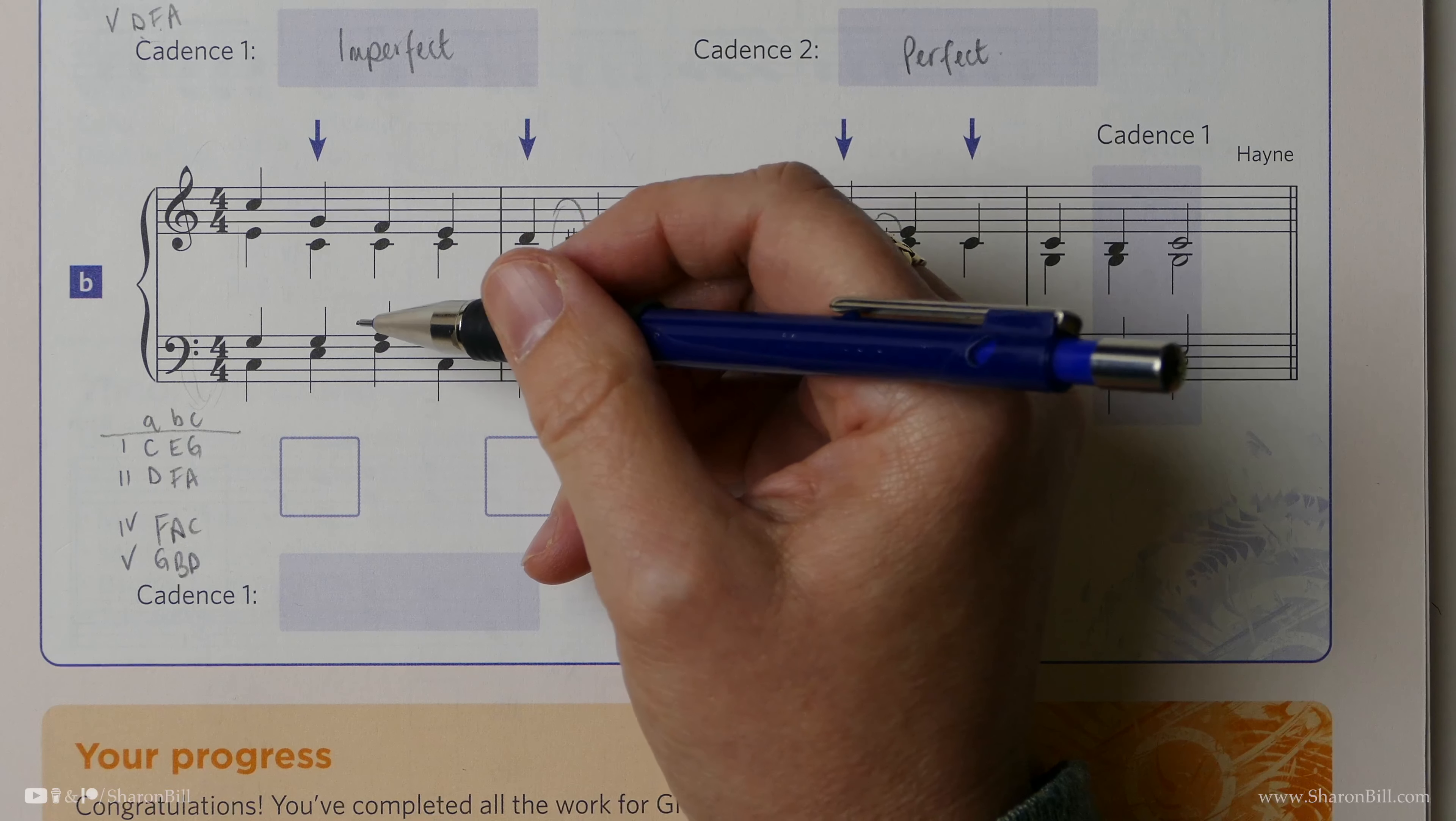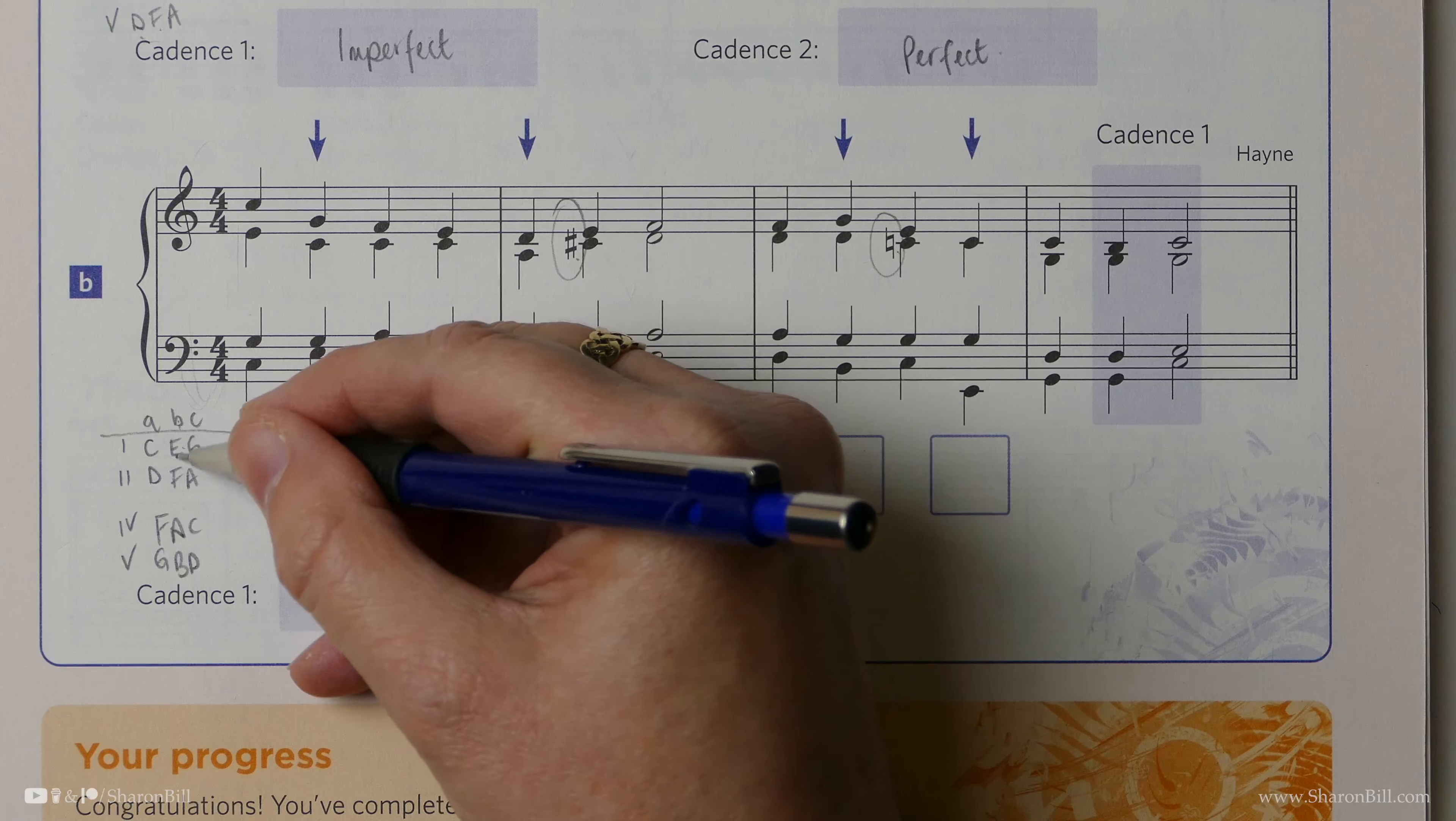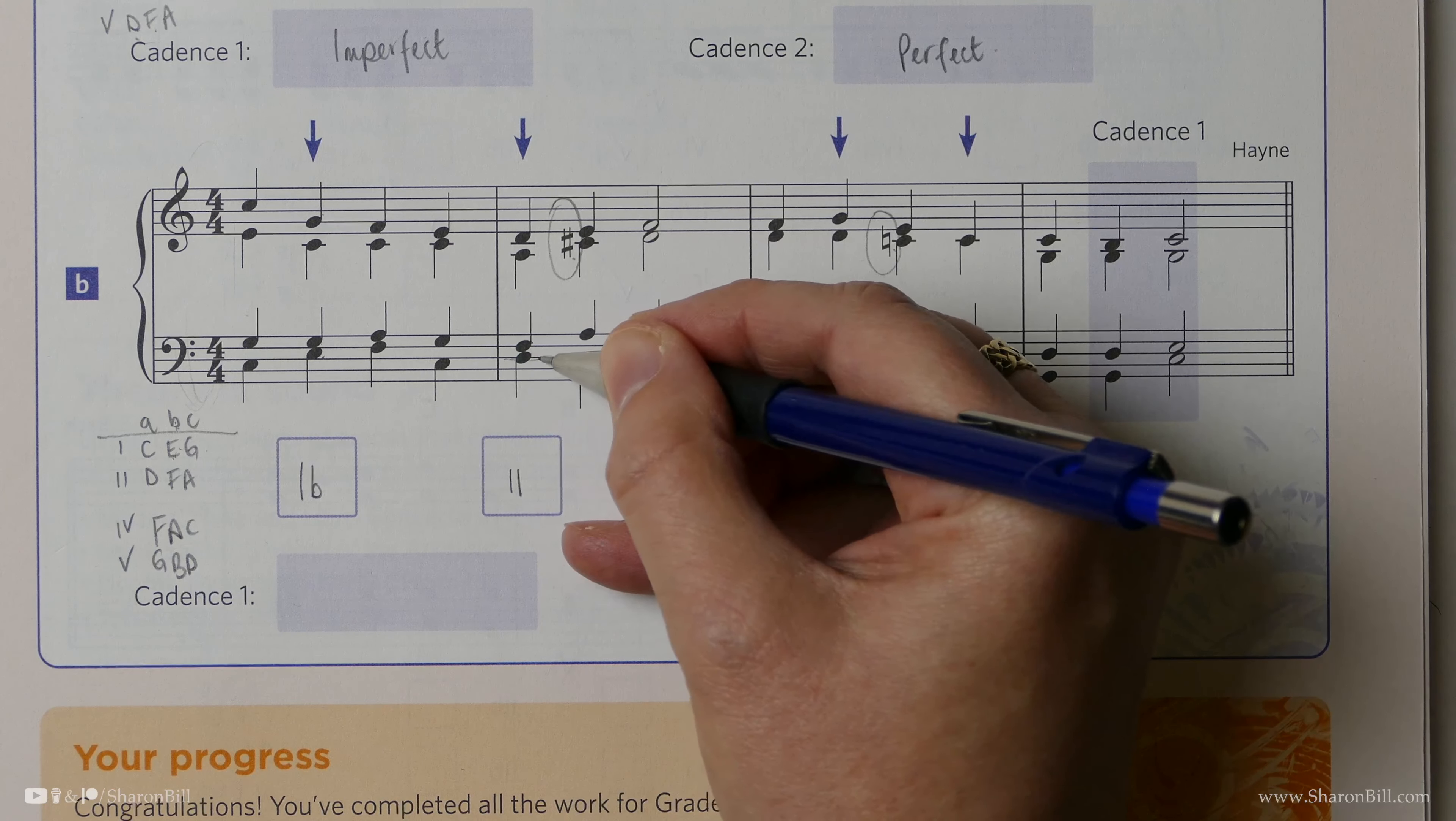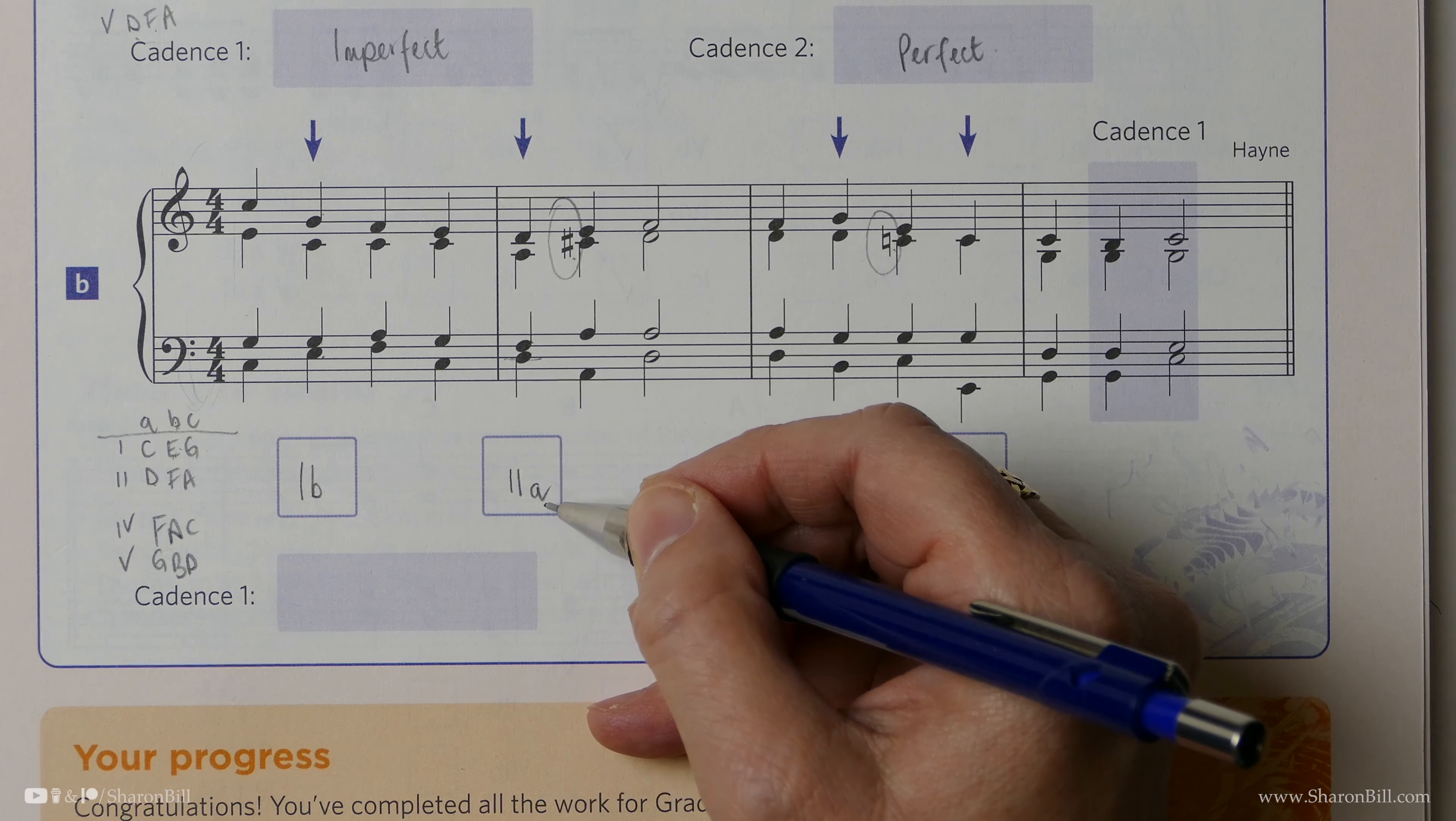So we may as well just go ahead and describe the chords. So we have E, G, C, G. That's a chord 1. And because the E is in the bass, it's a first inversion. It's a 1B. And then we have D, F, A, D. That's a chord 2. And because the D is in the bass, it's in root position. So we could say 2A. You can just say 2, but you may as well put A to be absolutely clear about that.